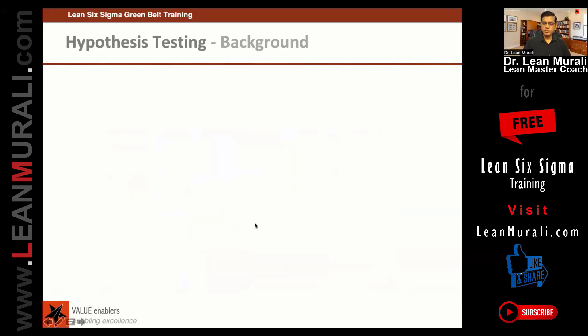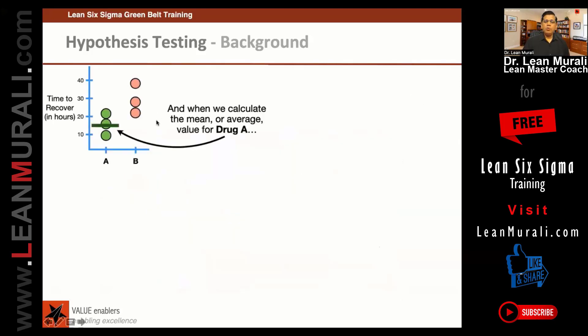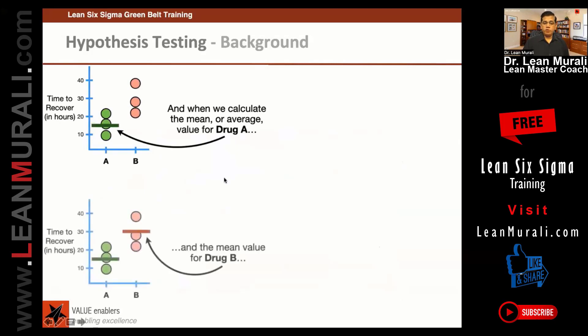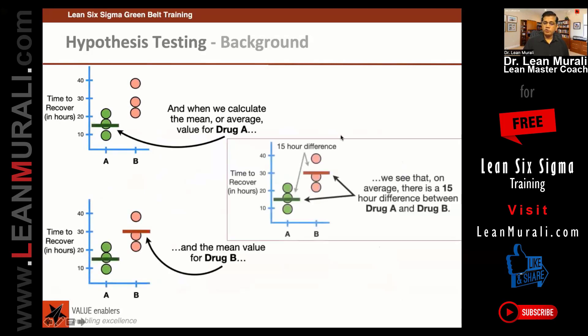Now we are going to get into hypothesis testing. We can calculate the average for drug A and the average for drug B, and we see that there is a 15-hour difference between drug A and drug B.